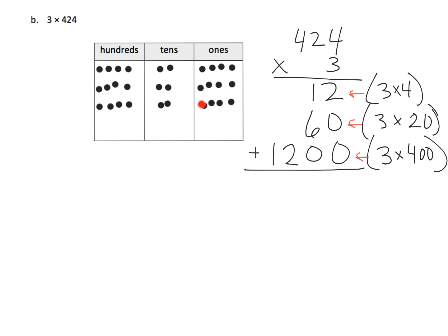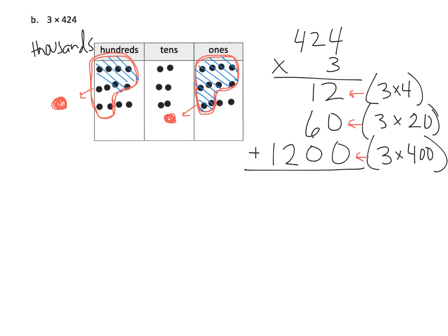We know that on the place value chart, anytime you have 10 in one column you can bundle them together for one in the column to the left. So we can count 12 ones — these 10 ones can be bundled together to equal 1 ten. That means those 10 ones are no longer here because we've bundled them together. We still have less than 10 tens, so we're okay there. But when we look at our hundreds we have 12 hundreds, which means we're going to take 10 of those hundreds and bundle them for one in the thousands place.